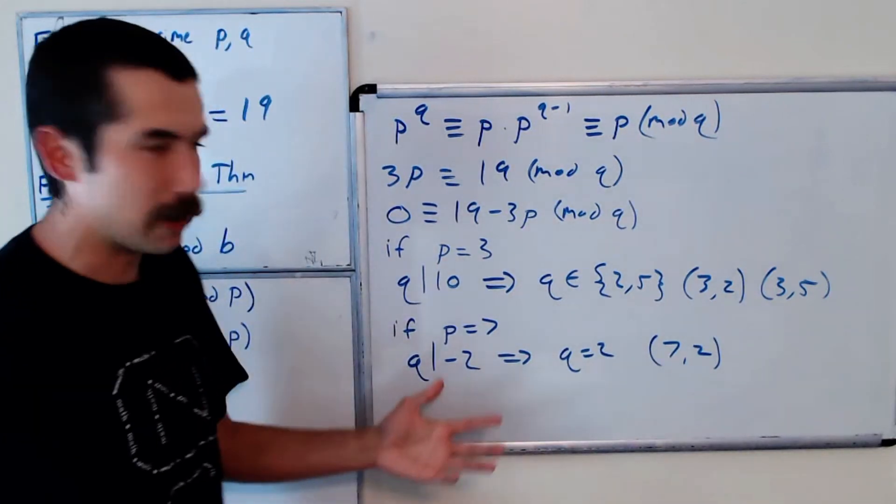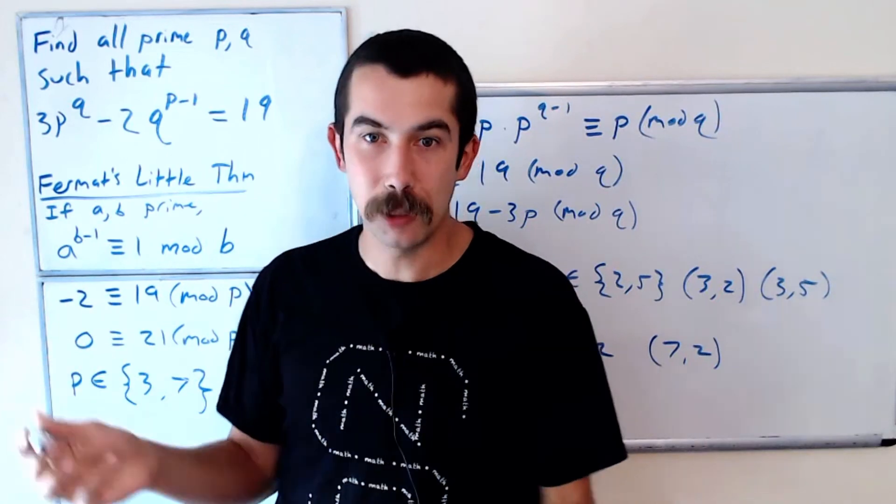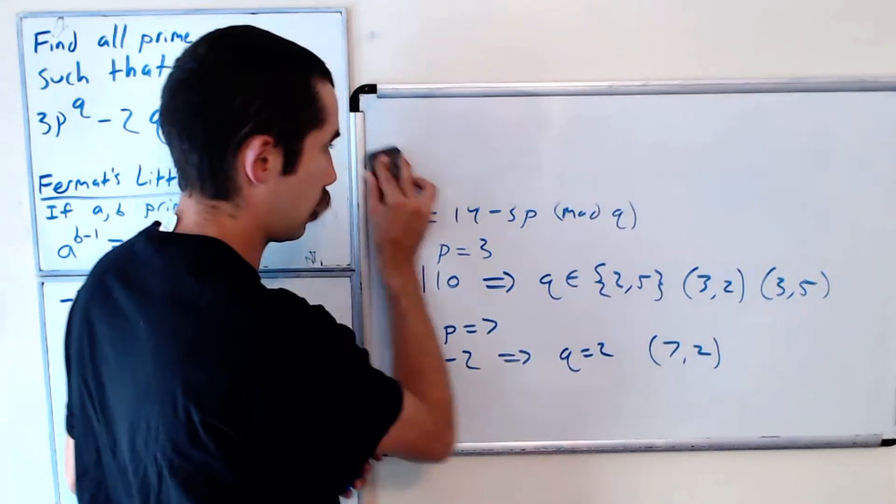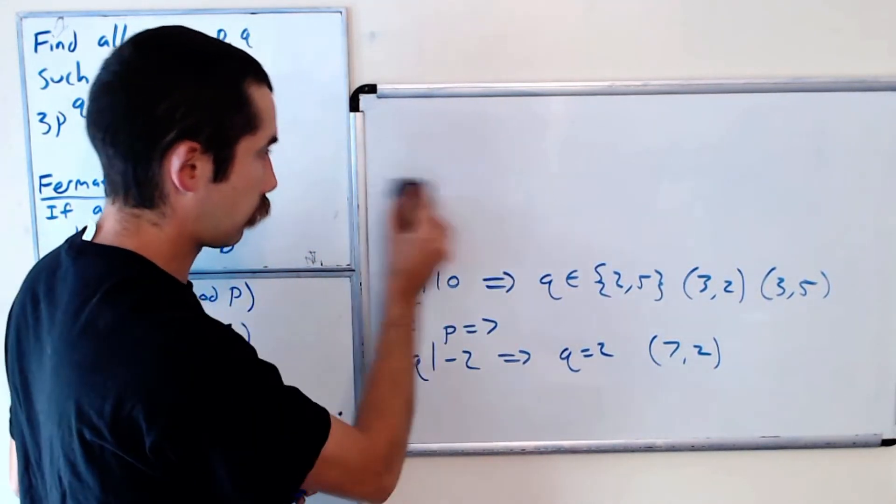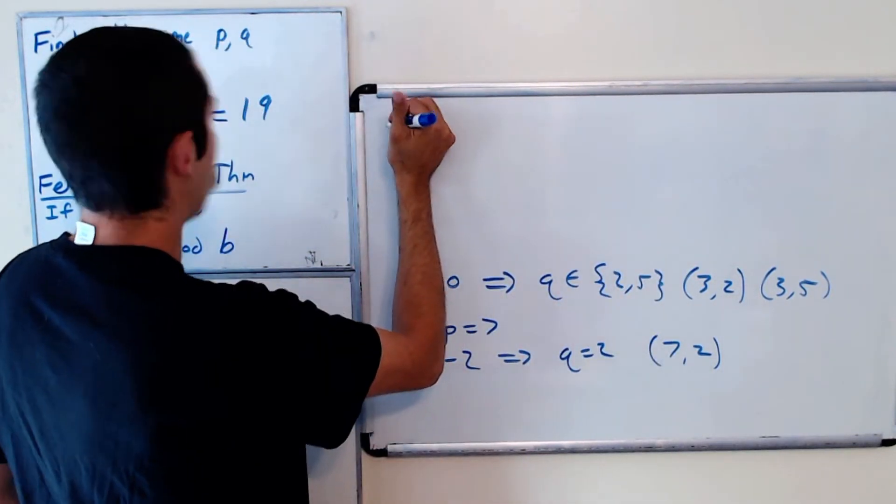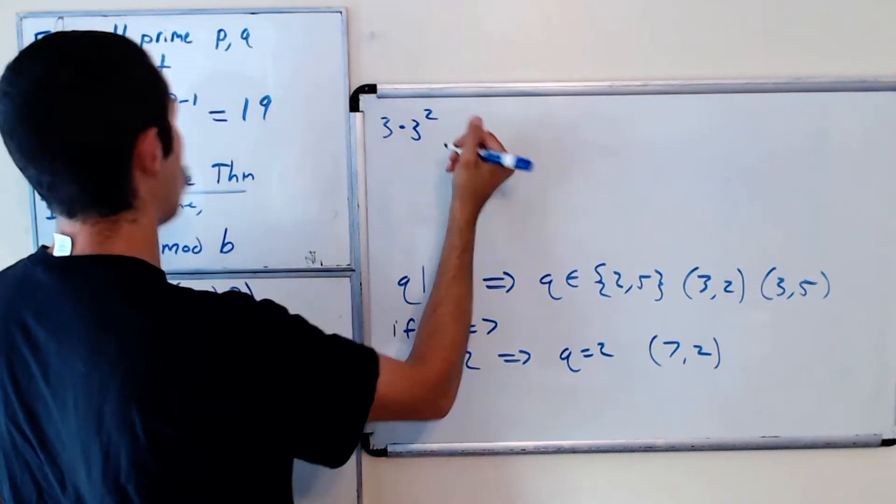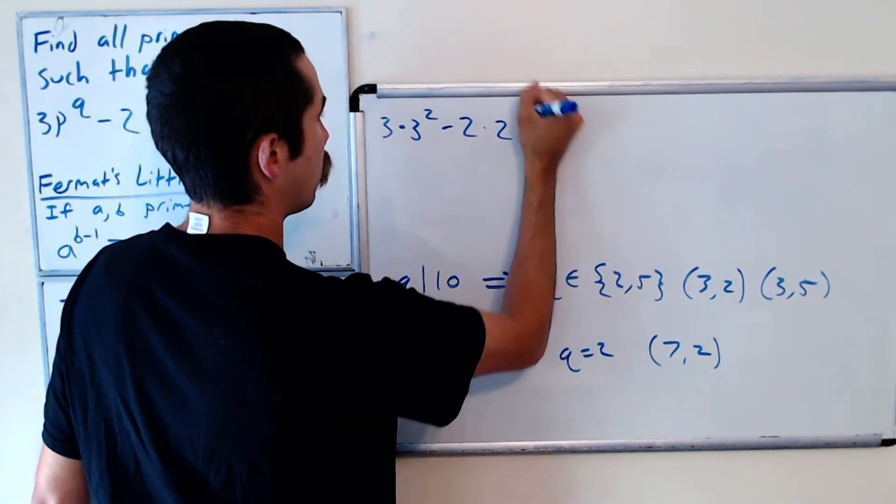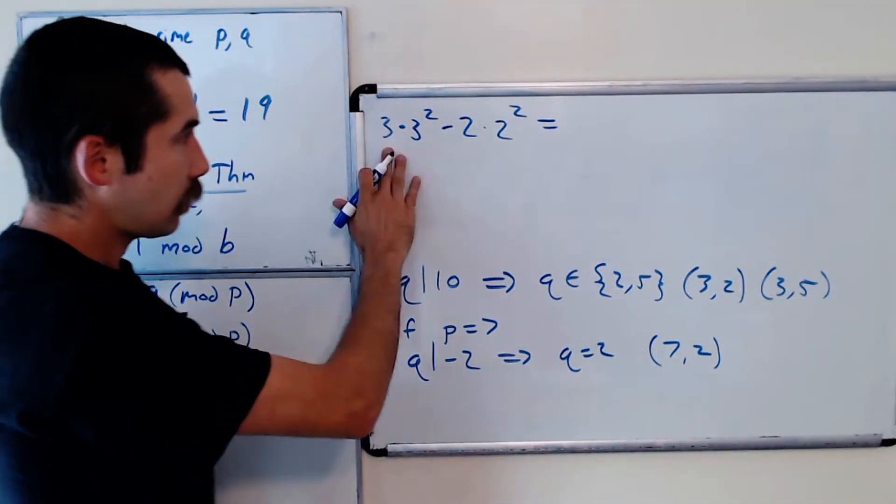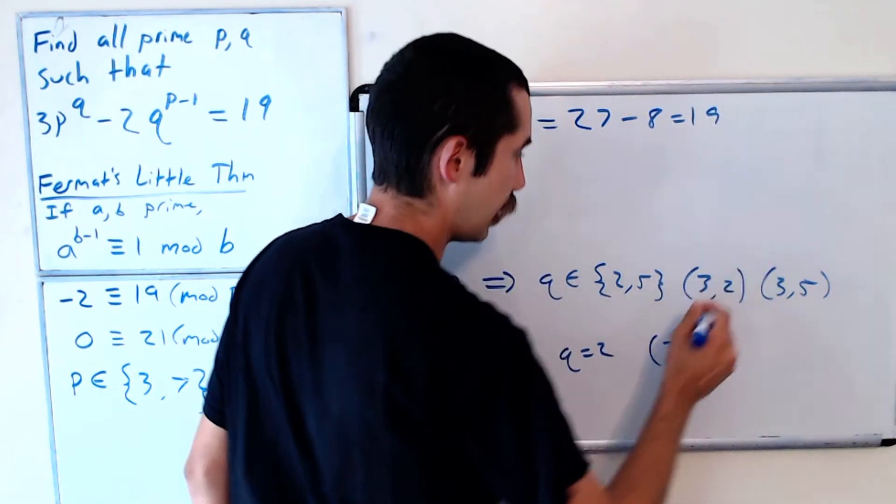So what we're going to do now is just plug in these numbers into the original equation and see which ones work. So let's just check if it works. Is it true that 3 times 3^2 minus 2 times 2^3, is this equal to 19? This is 27 minus 8, which is 19. So this is one of the answers.